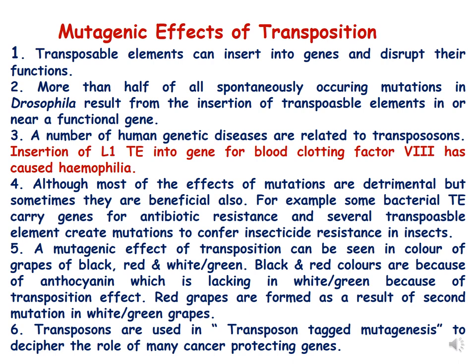Now let us discuss the mutagenic effects of transposition. Transposable elements can insert into genes and disrupt their functions. This has been discussed through examples of AC/DS elements in maize where the pigmentation pattern is disrupted, resulting in a variegated pattern. We also discussed the example of wrinkled peas and variegated color in roses.